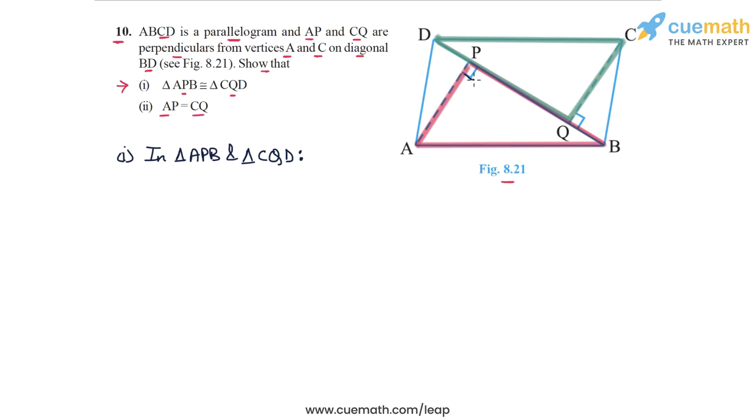So this angle here, angle APB and angle CQD, both of these are 90. So we can write angle APB is equal to angle CQD, and both of these are equal to 90 degrees. This is basically given to us, because AP and CQ are perpendiculars onto BD.